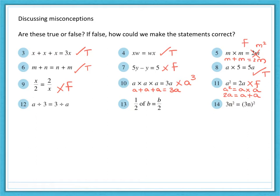Number twelve, a divided by 3 is not the same as 3 divided by a. That's false. Number thirteen, a half of b is equal to b over 2. That's true. Number fourteen, this is not true. Three times n squared is not the same as 3n all squared. 3n all squared is the same as 3n multiplied by 3n. And as you will find out in the next task, this is equal to 9n squared. So it's not the same as 3n squared.